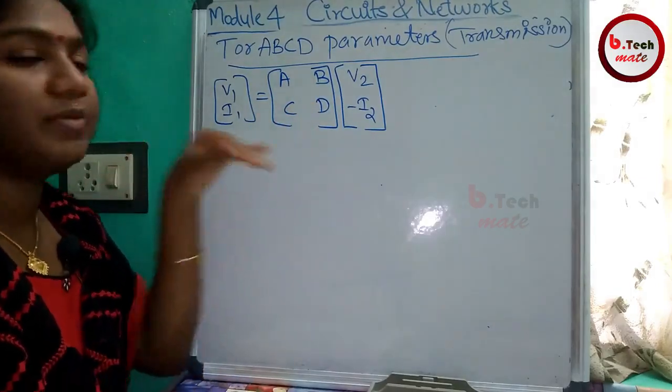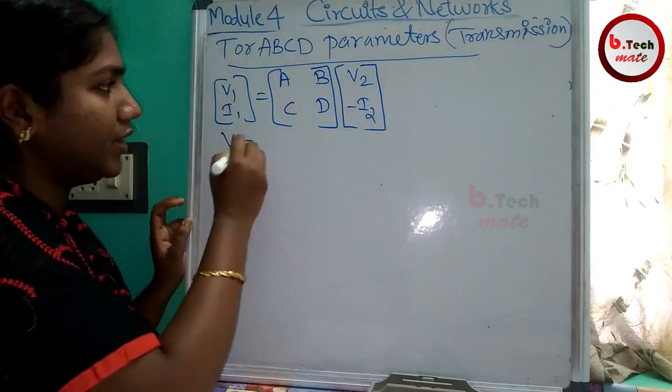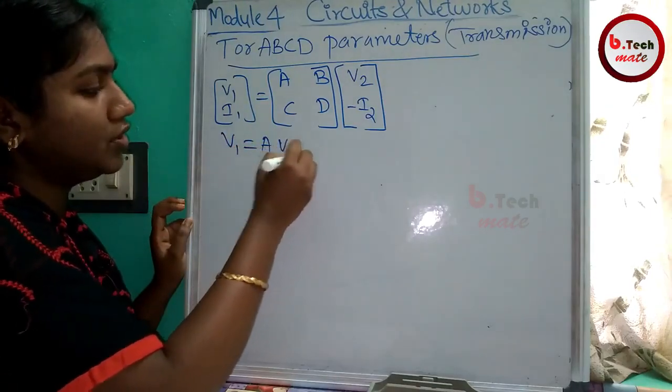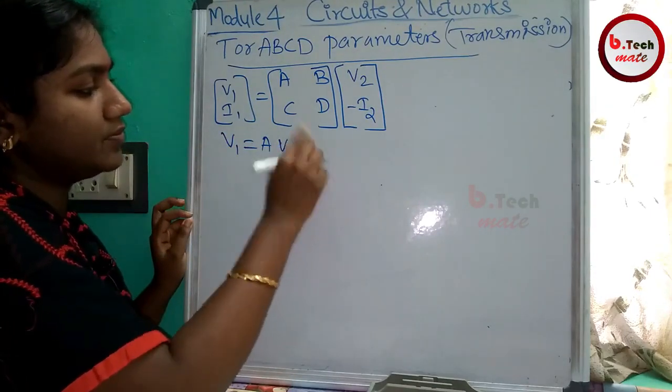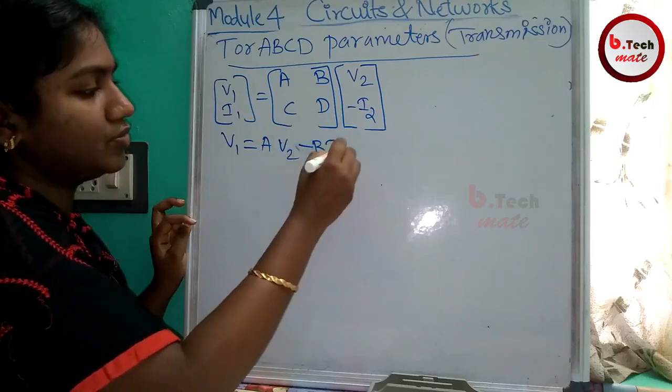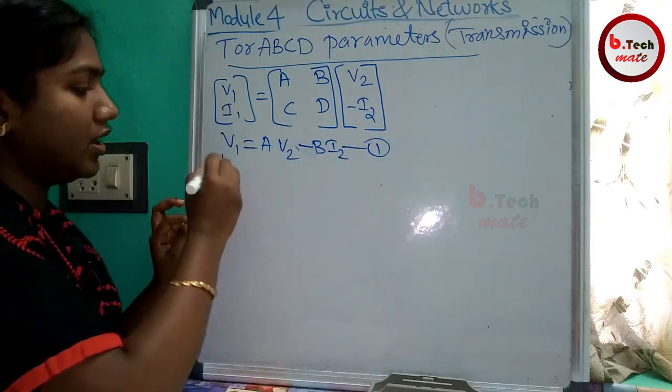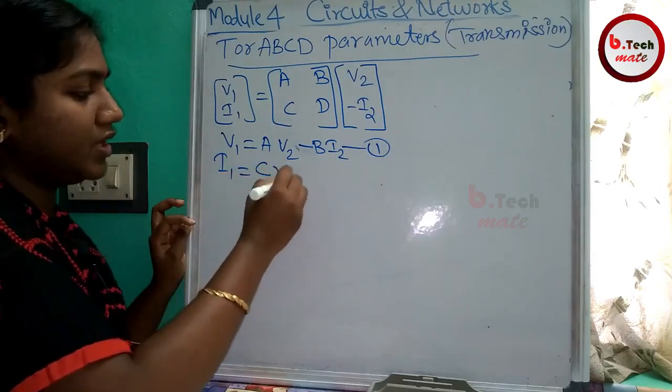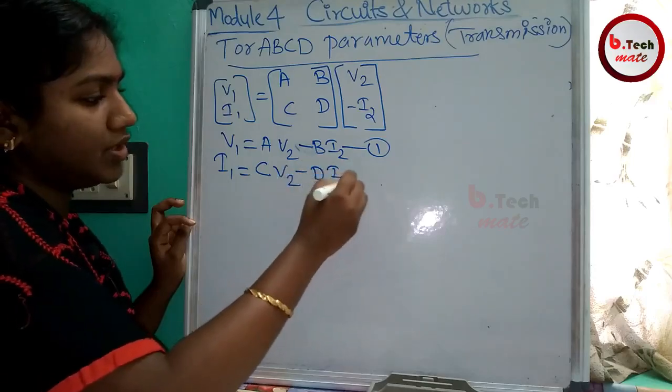Now let's multiply the matrix. V1 equals AV2 minus BI2, equation number 1. I1 equals CV2 minus DI2, equation number 2.